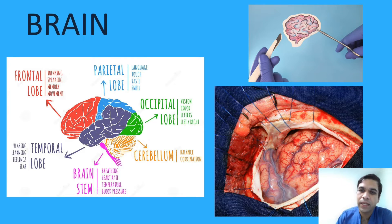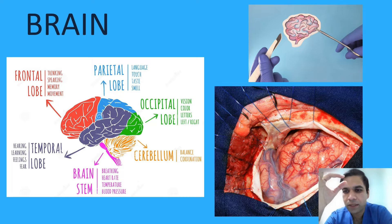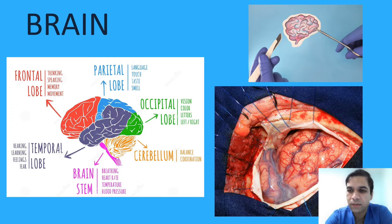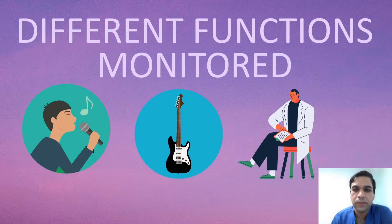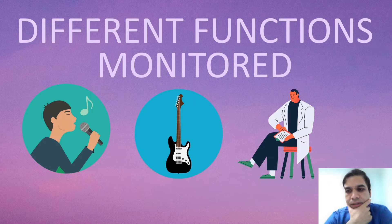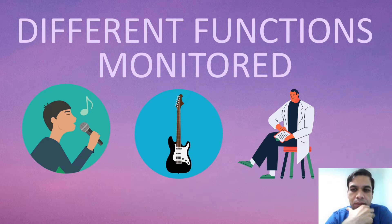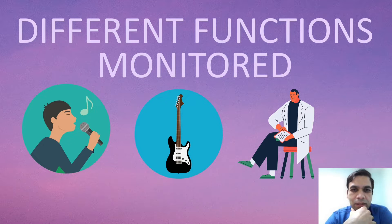We all know that brain has special functions and not every part of the brain has a unique function. The parts of the brain which actually do unique functions are called the eloquent parts of the brain. We are particularly interested in the speech and motor area. In this presentation I will be focusing more on the motor cortex identification and preventing damage to the motor area, which is concerned with movements of your body. Speech is a different subject and will not be covered here.